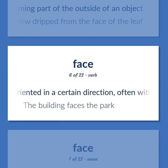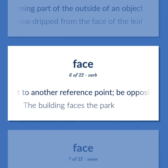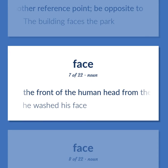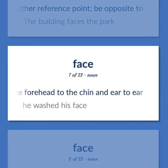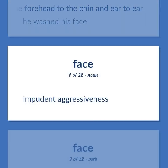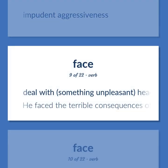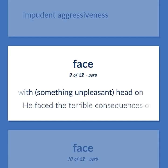To be oriented in a certain direction, often with respect to another reference point; to be opposite to — the building faces the park. The front of the human head from the forehead to the chin and ear to ear — he washed his face. Impudent aggressiveness. To deal with something unpleasant head on — he faced the terrible consequences of his mistakes.